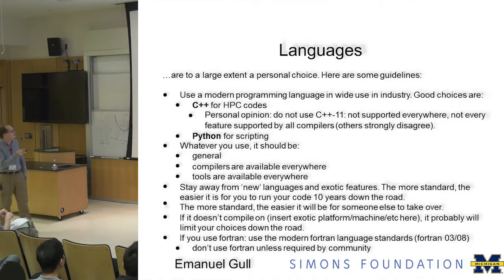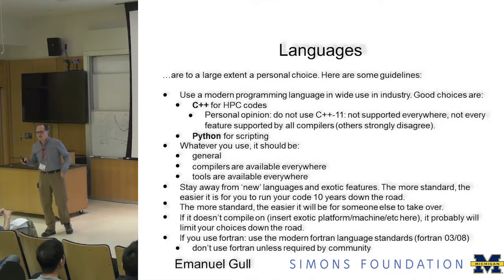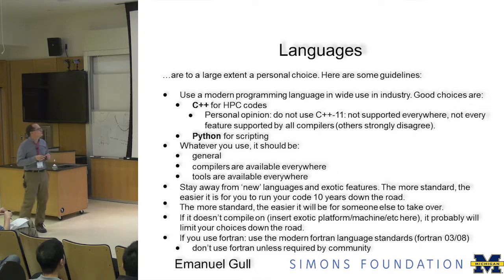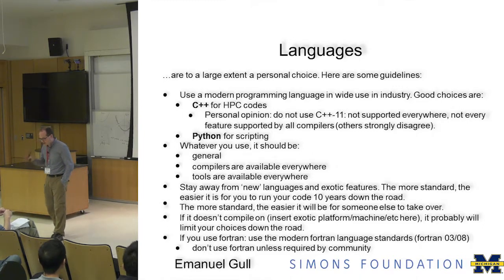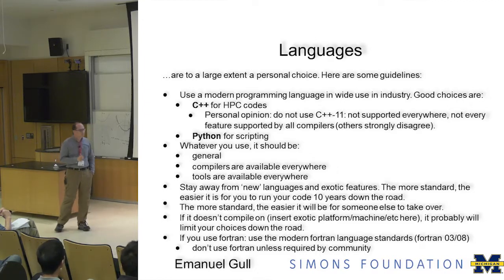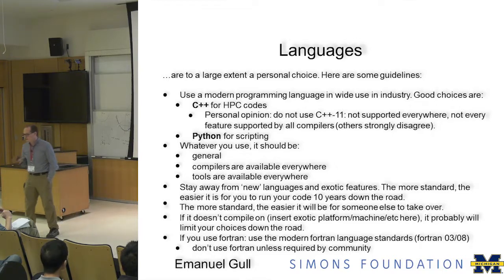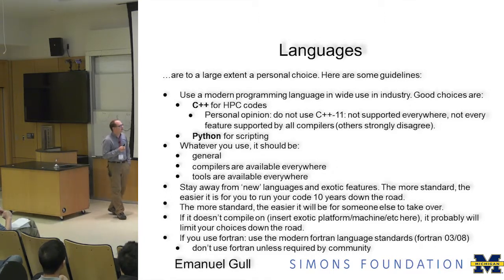Whatever you choose, try to choose a modern programming language in wide use in industry. Good choices are C++, Python, and if your field requires it, Fortran. For high-performance code, C++ is recommended — personally, if you use C++, stick to C++11 and don't use anything fancier like C++14 or C++17. Try to boil your requirements down to a minimum using well-established tools so that you can still run your code 20 or 40 years down the road. Make sure compilers are available everywhere — if GCC runs on your washing machine, your code will compile 20 years from now.